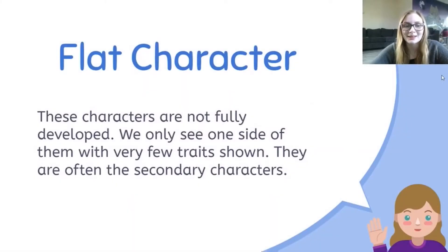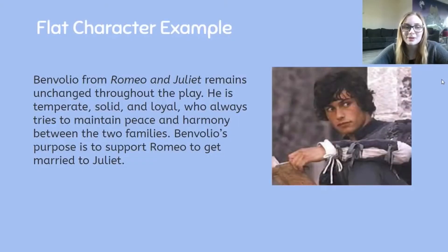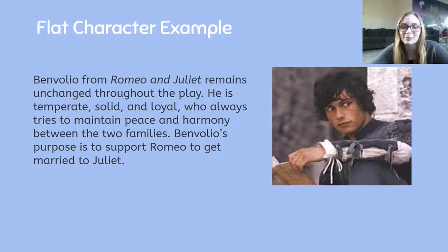A flat character. These are characters who are not fully developed. We only see one side of them with very few traits. They are often secondary characters. An example of a flat character is Benvolio from Romeo and Juliet. He remains unchanged throughout the play — he is temperate, solid, and loyal. He always tries to maintain peace and harmony between the two families. Benvolio's purpose is to support Romeo to get married to Juliet, so he's not the main character.